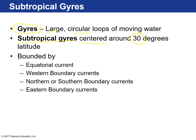Thirty degrees latitude corresponds to those horse latitudes with a lot of descending dry air from the upper atmosphere. These subtropical gyres, considered in their totality, are bounded by four major currents: an equatorial current, a western boundary current, a northern or southern boundary current, and an eastern boundary current. These four currents encompass the entire gyre.